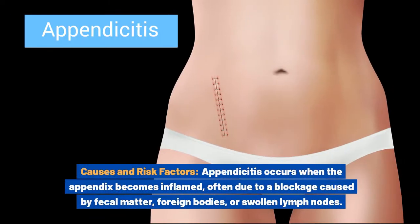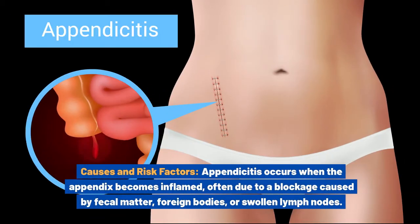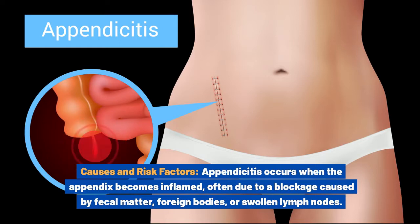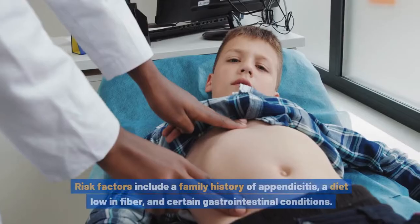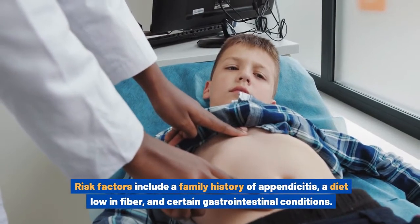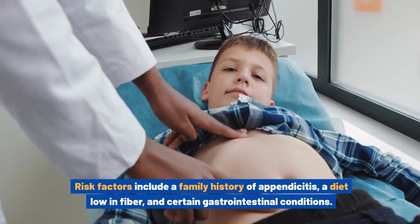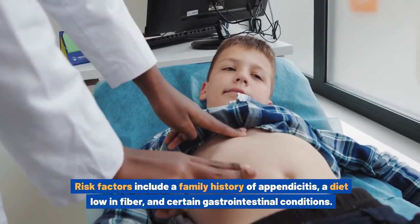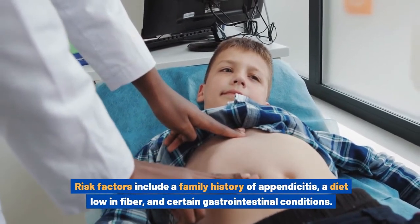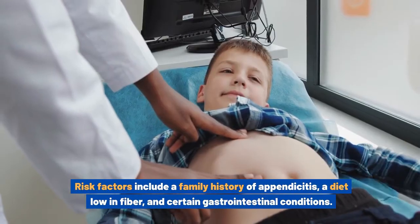Causes and risk factors. Appendicitis occurs when the appendix becomes inflamed, often due to a blockage caused by fecal matter, foreign bodies, or swollen lymph nodes. Risk factors include a family history of appendicitis, a diet low in fiber, and certain gastrointestinal conditions.